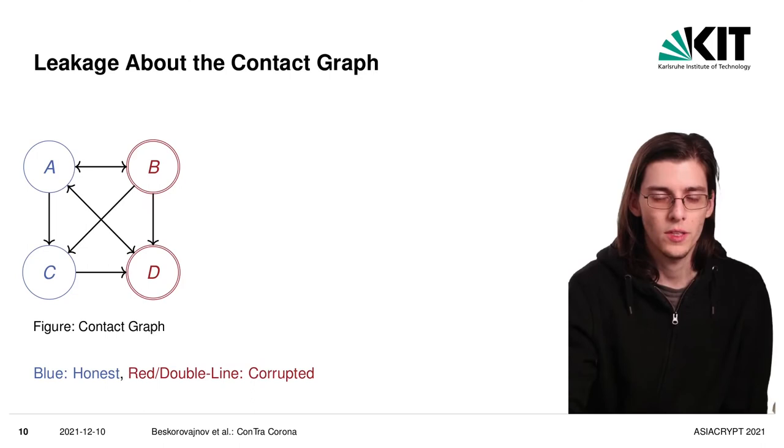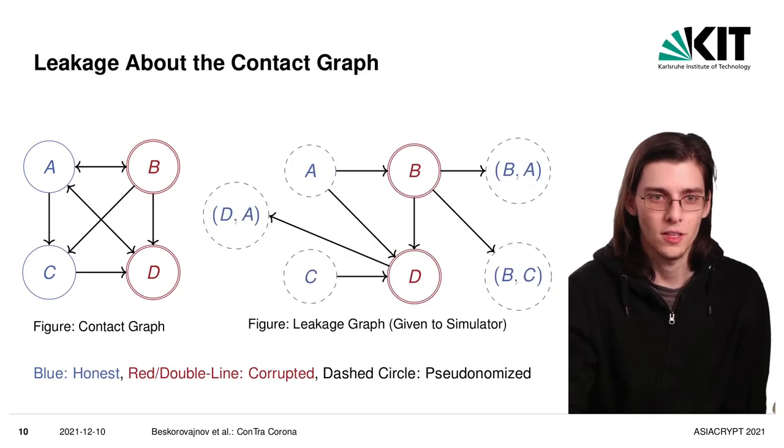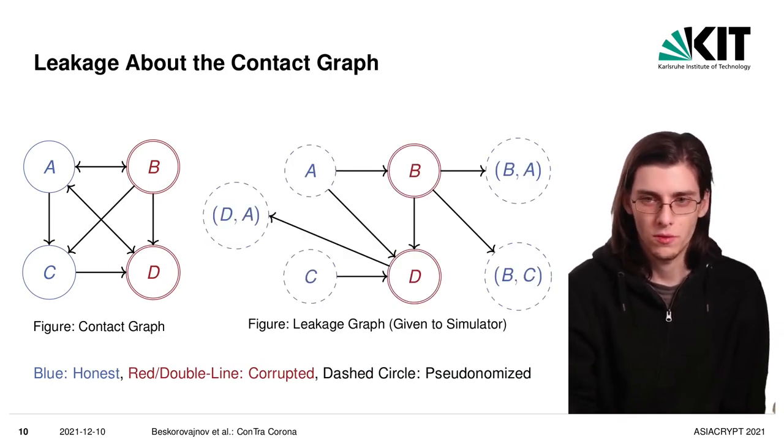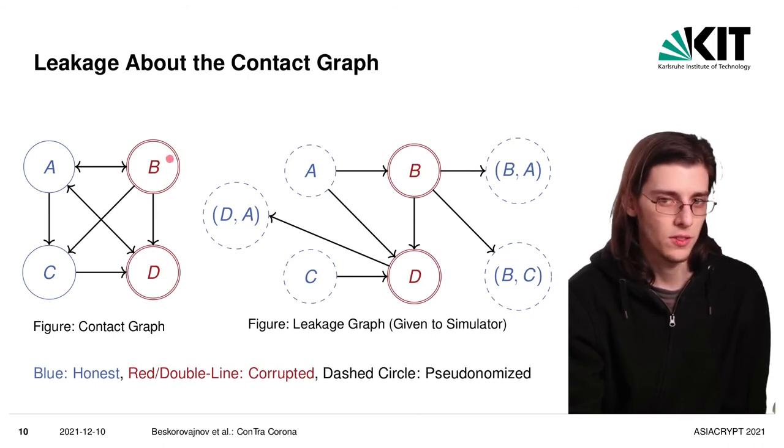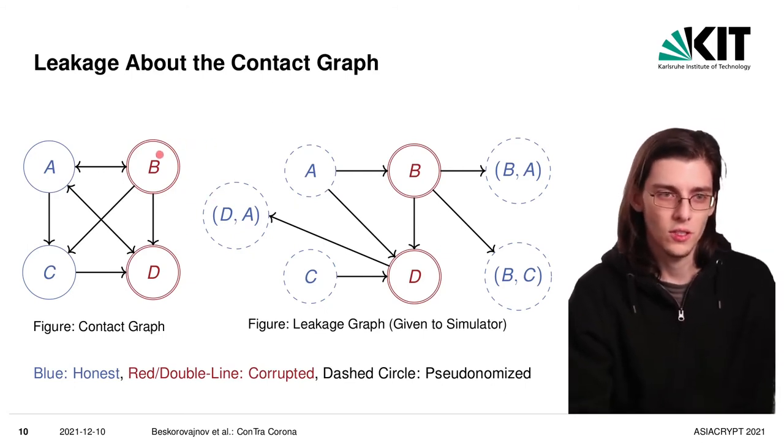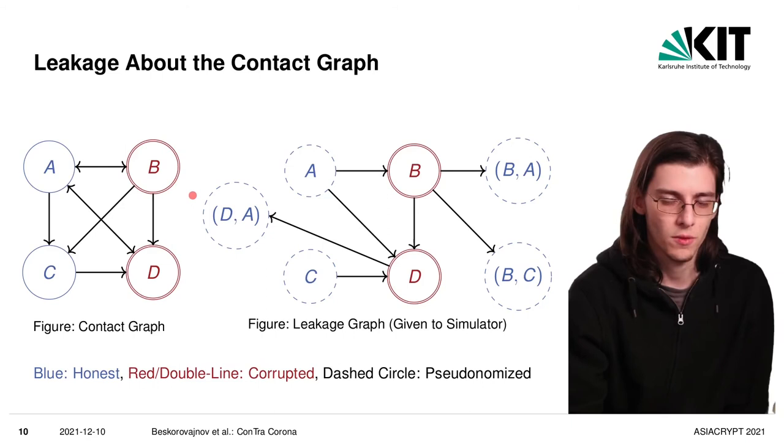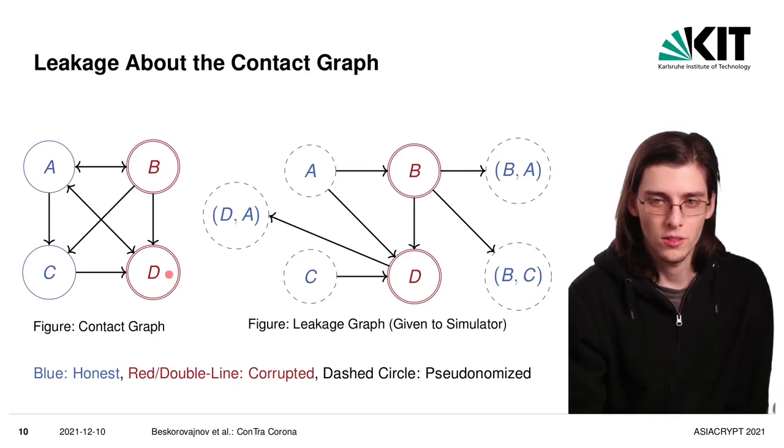And when we have this contact graph, some information about this contact graph needs to be leaked to the adversary because we cannot hide it anyway. And in order to later on be able to improve security, we need to make this leakage explicit. So for example, this edge between the corrupted nodes B and D, the adversary can always find out if there is this edge and that it's only this direction because it can just let the corrupted part B send a Bluetooth broadcast with some arbitrary value. And if part D receives that value, it's clear that this edge has to be present. So in the leaked contact graph, all edges between only corrupted nodes are just copied over.